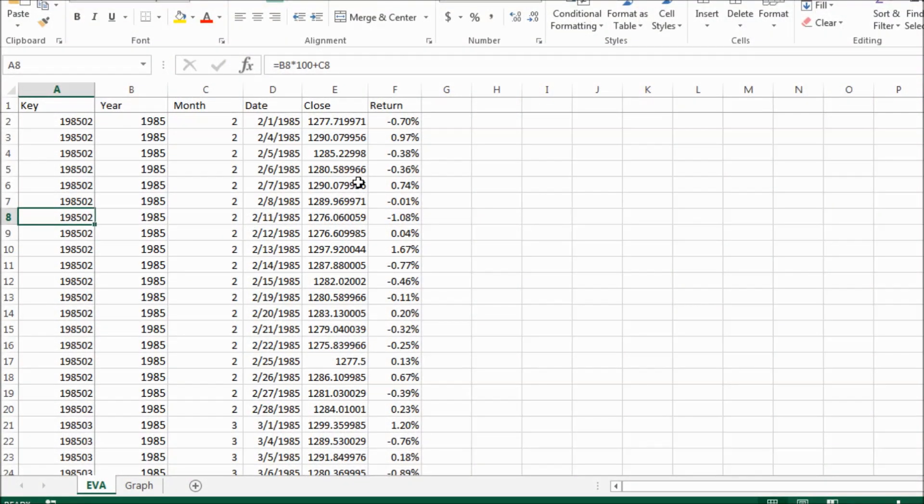This is the data I downloaded from Yahoo Finance. This is as of date. This is closing price of Dow Jones index. From the closing price, I calculated daily return. And I pick up month and year from as of date. And I concatenated year and month as my key. What I want to do is I want to pick up the minimum return for every month as my extreme data.